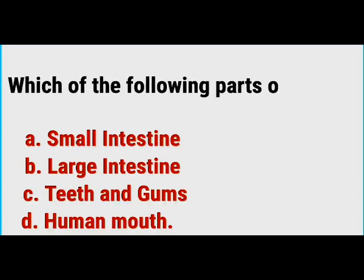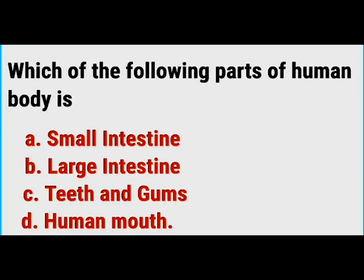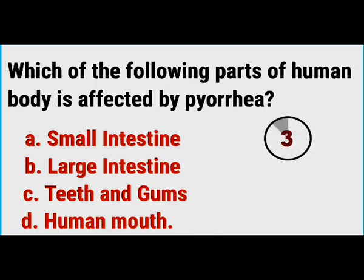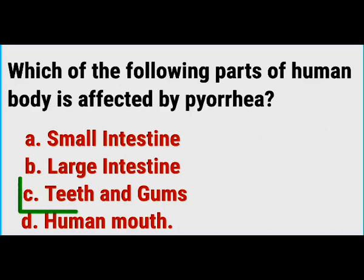Which of the following parts of the human body is affected by pyorrhea? The correct answer is teeth and gums.